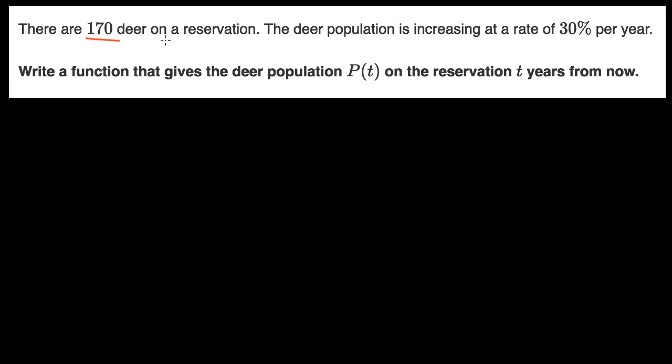There are 170 deer on a reservation. The deer population is increasing at a rate of 30% per year. Write a function that gives the deer population P(t) on the reservation t years from now.